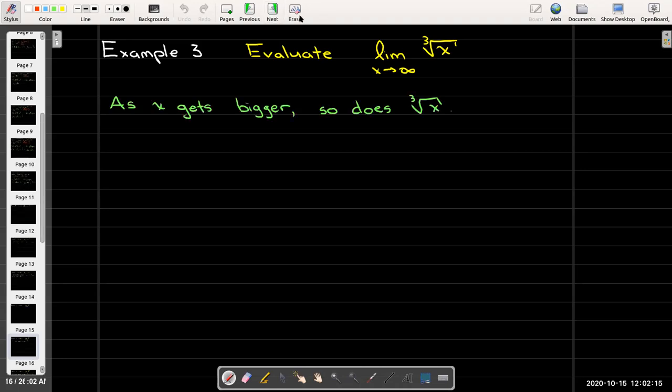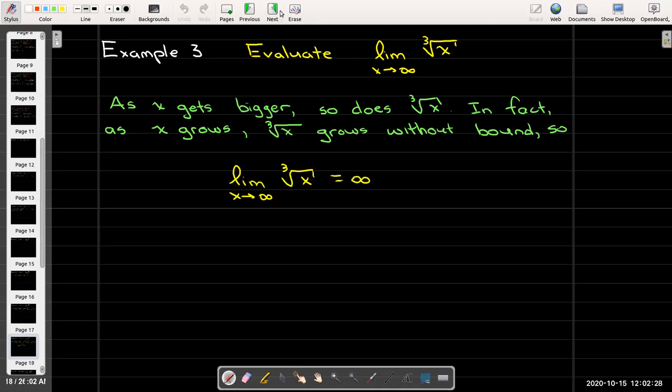Well as x gets bigger the cube root of x also grows. It doesn't grow as fast but it still keeps growing and in fact it never stops growing. It grows without bound. So in this case we would say that the limit as x approaches infinity of ∛x equals infinity.